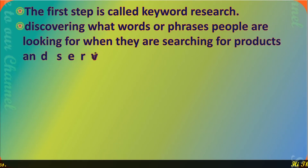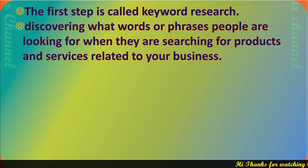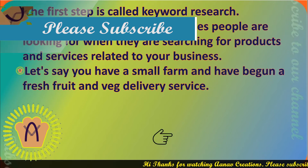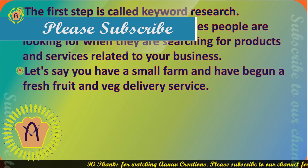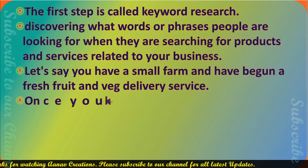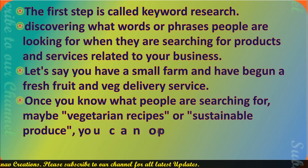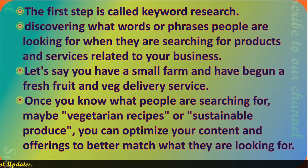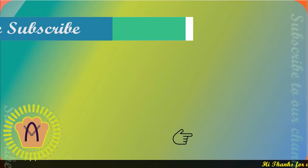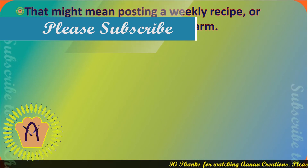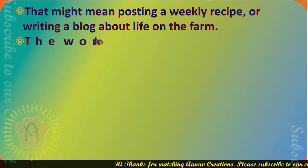There is no shortcut for search engine optimization, which helps you improve your website's visibility to people searching for products or services like yours. The very first step is called Keyword Research — discovering what words or phrases people are looking for when searching for products and services related to your business. Let's say you have a small farm and have begun a fresh fruit and veg delivery service. Once you know what people are searching for, maybe vegetarian recipes or sustainable produce, you can optimize your content and offering to better match what they are looking for. That might mean posting a weekly recipe or writing a blog about life on the farm.